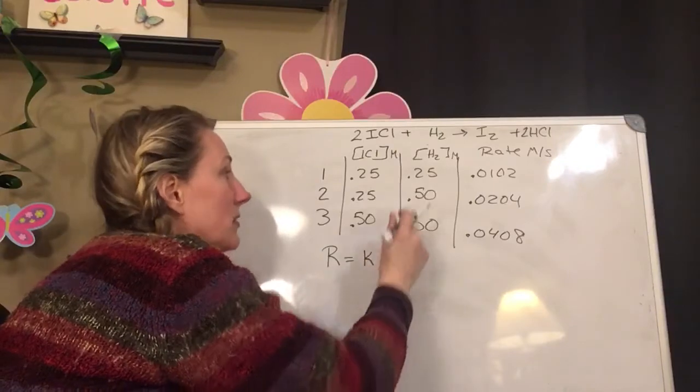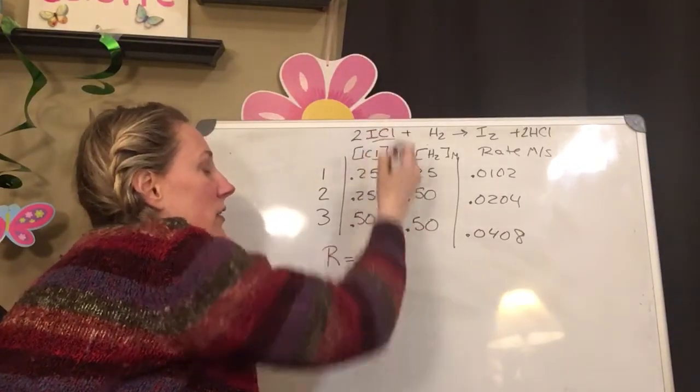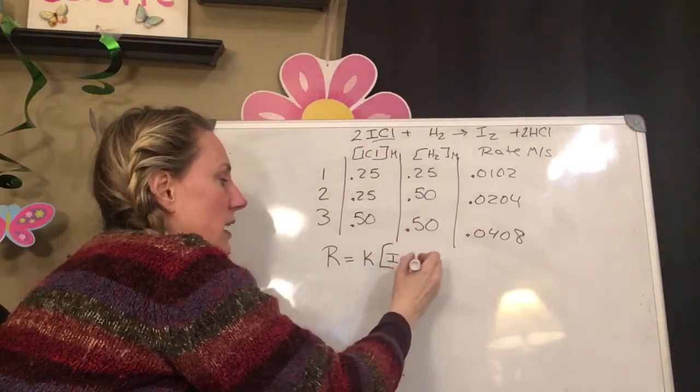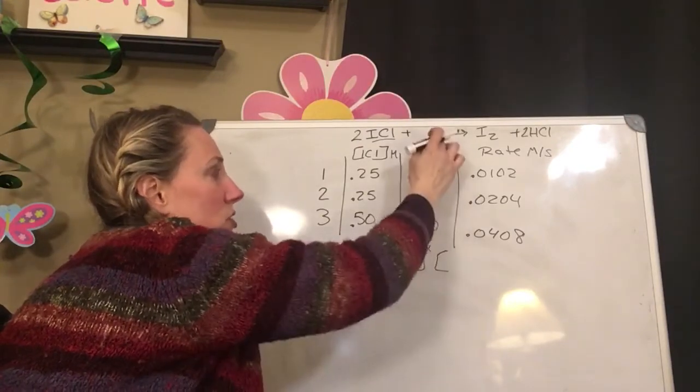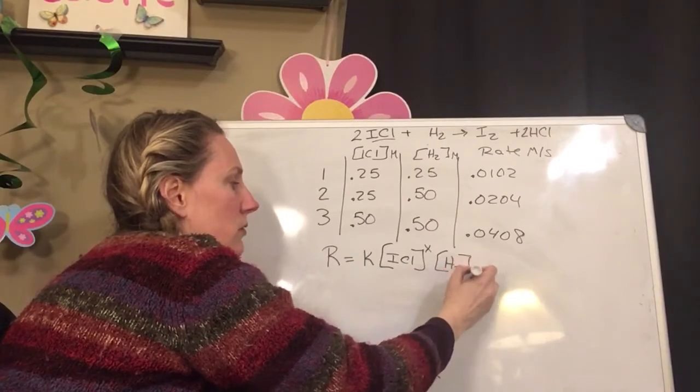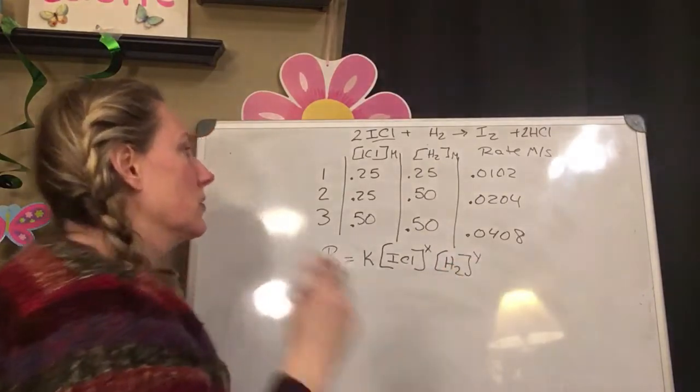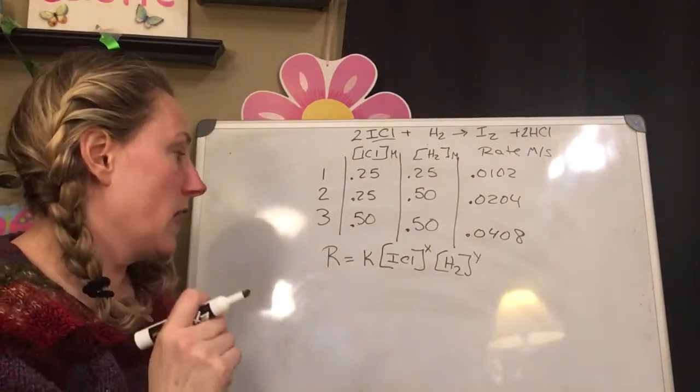times the concentration of ICl to some exponent, times the concentration of H2 to some exponent. So we're going to figure out what those exponents are.